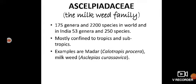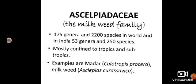Next comes the family Asclepiadaceae — the milkweed family. As the name suggests, when we break this plant (like Calotropis/aankda), milky latex comes out. It has 175 genera and 2200 species in the world; in India there are 53 genera and 250 species. It is mostly confined to tropical and subtropical regions. Examples include: Calotropis procera (aankda/madar), Asclepias, Ceropegia, and Tylophora indica.